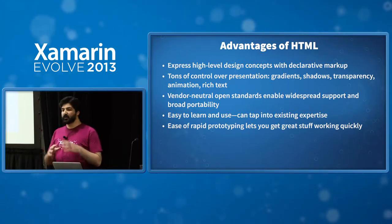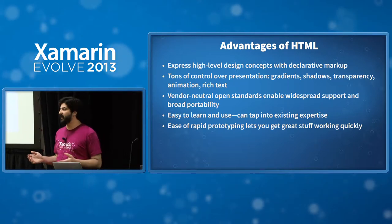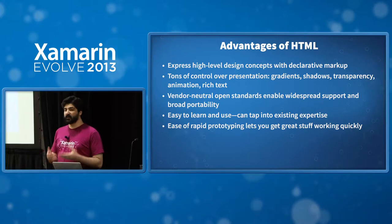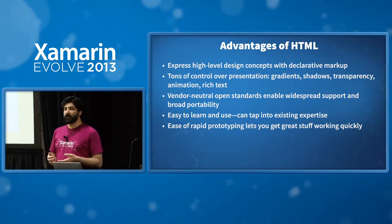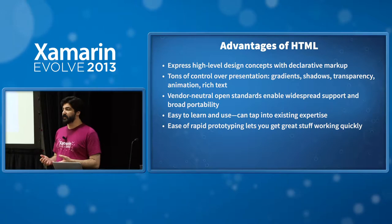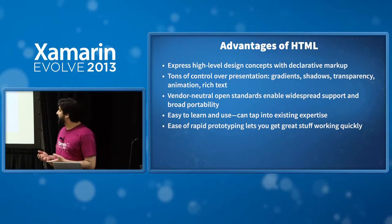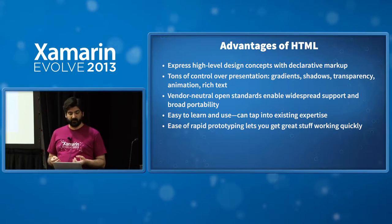If you look at Android 2.3, which is still like 40% of Android handsets, they're missing some critical features in the built-in HTML rendering engine — features like web workers, which allow you to do threading. The fragmentation poses a lot of challenges for HTML mobile development.